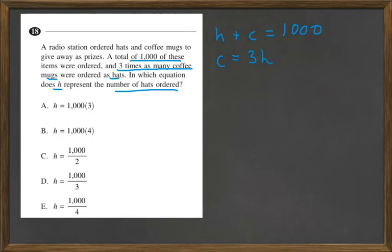Now let's substitute this into our original equation, and we get H plus 3H equals 1,000. So 1H plus 3H is 4H equals 1,000.